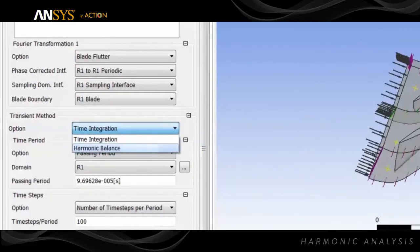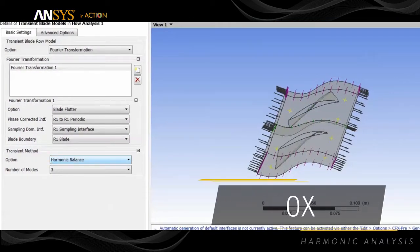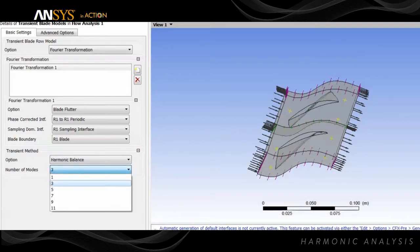Here we're setting up a harmonic analysis in ANSYS CFX. Harmonic analysis will speed up the solution of the transient periodic turbomachinery flow by 10 to 100 times over standard time advancement methods.